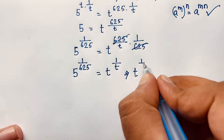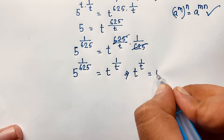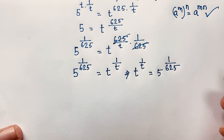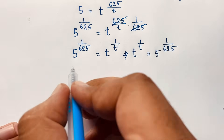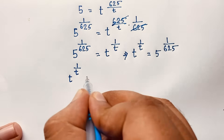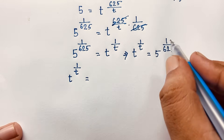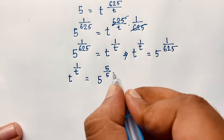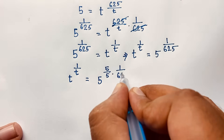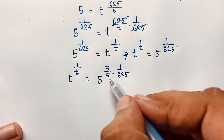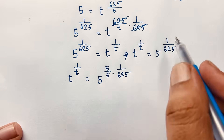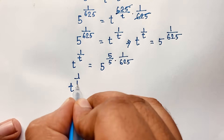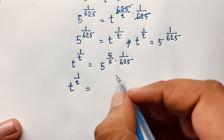So now t to the power 1 over t is equal to 5 to the power 1 over 625. I can rewrite 1 over 625 as 5 over 5 times 625, where the 5 in the numerator and denominator cancel, so nothing changes in value.